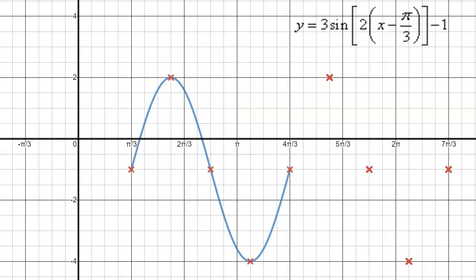So essentially what I've done is I've created points to be able to help me graph another cycle. And this cycle then would look like this, simply by extending the curve. Now we have two cycles of the sinusoidal function graph.